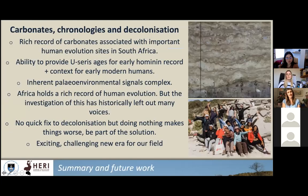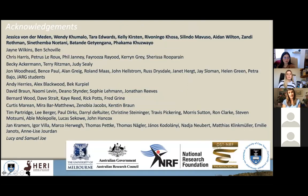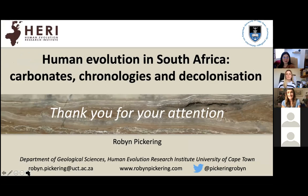To wrap up: we have rich records of carbonate rocks associated with important human evolution sites in South Africa. Our ability to provide U-series ages has given a chronology for the early hominin sites and context for the early modern human record in the southern Kalahari. There are inherent paleoclimate signals in these carbonates, complex but being worked on. Africa holds a rich record of human evolution, but its investigation has historically excluded many voices. There's no quick fix to decolonization, but doing nothing makes things worse — be part of the solution. We are entering an exciting and challenging new era in our field.